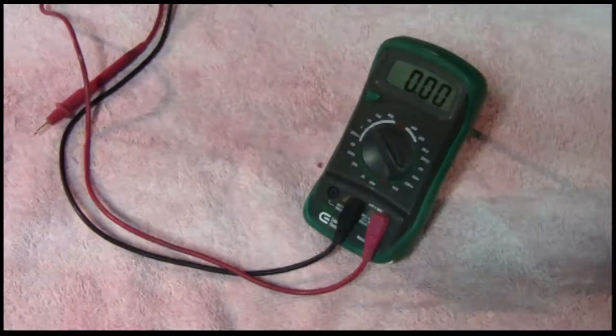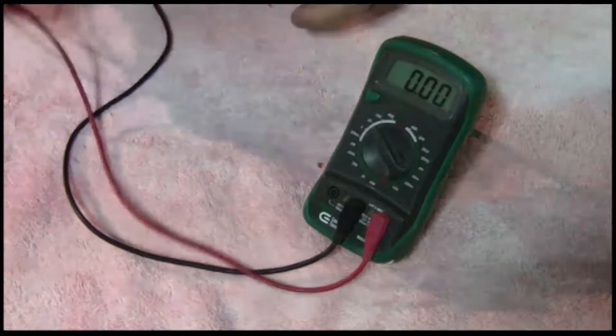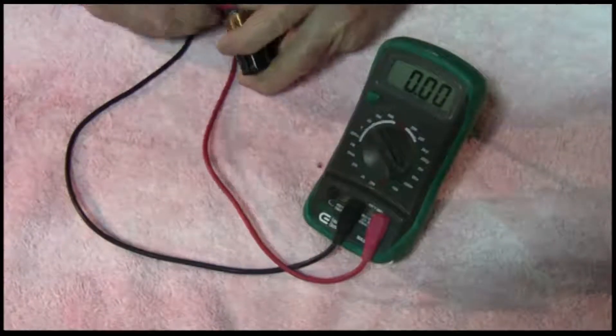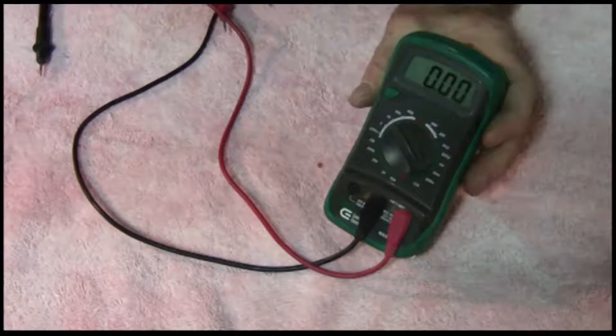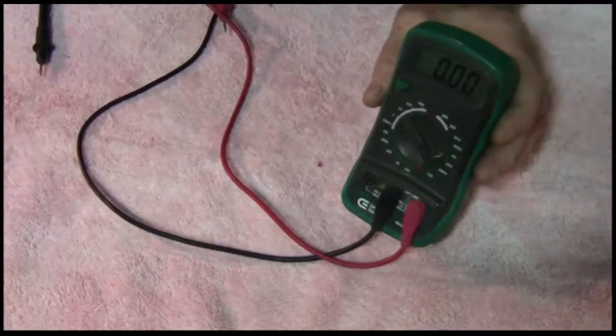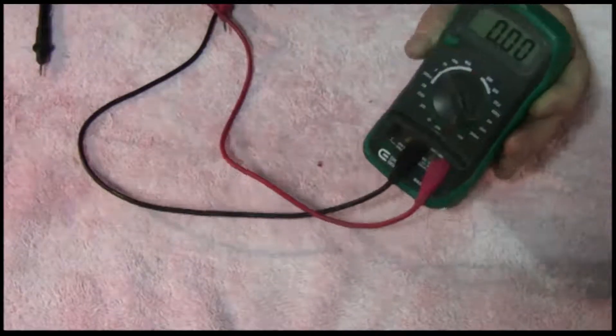Right now it's set for 20 volts direct current. So let's check out this battery. Oh, it's a little weak, but no matter. You can't do without this, and you should always test everything you work on before you work on it to see if it's live or not.